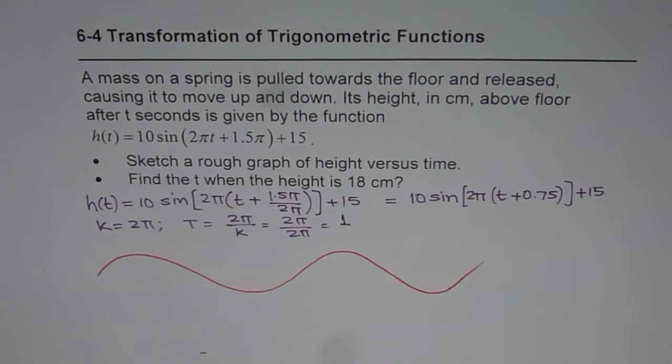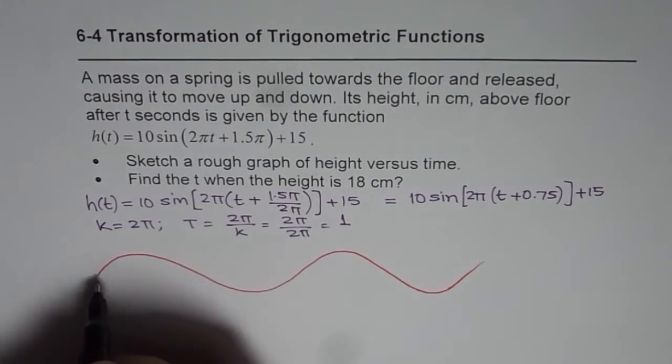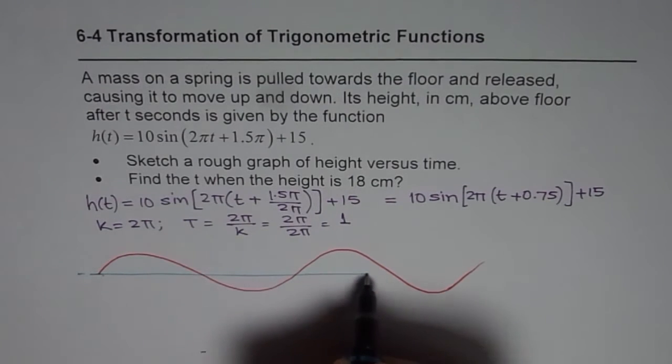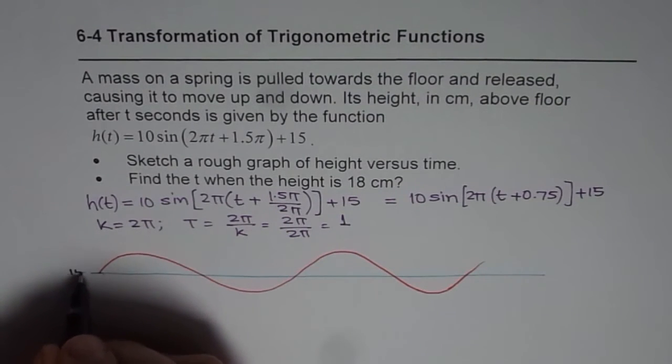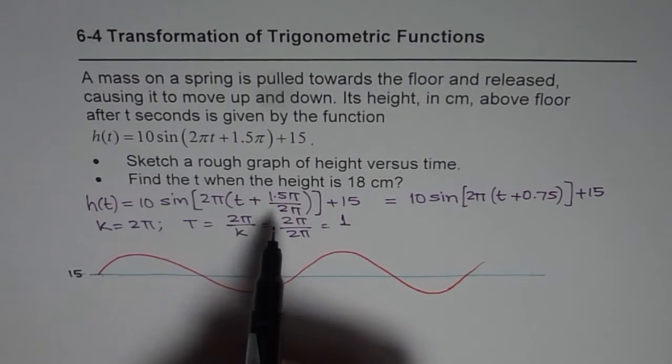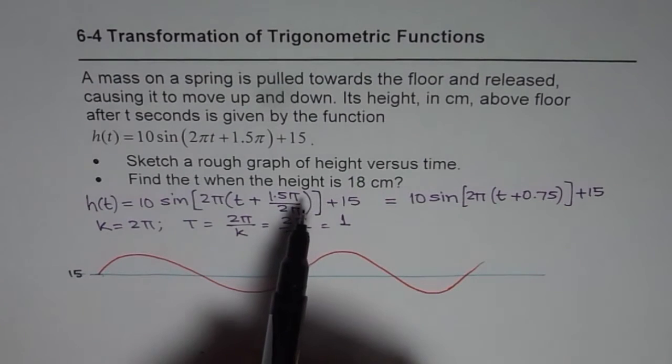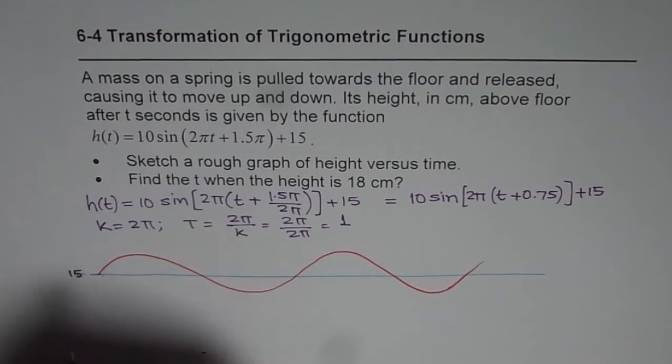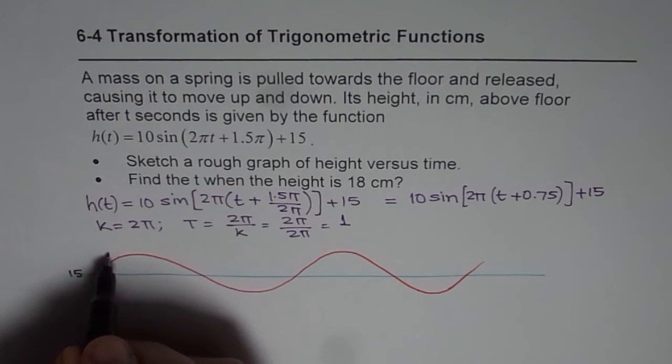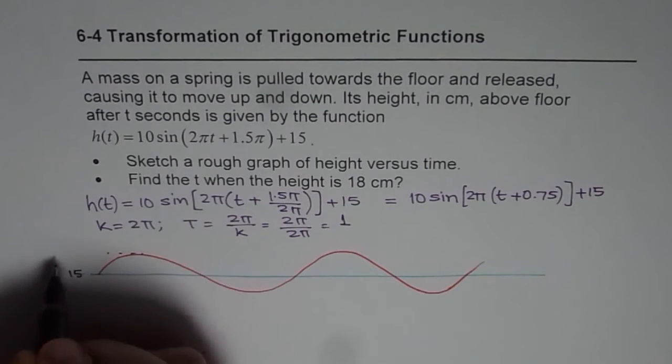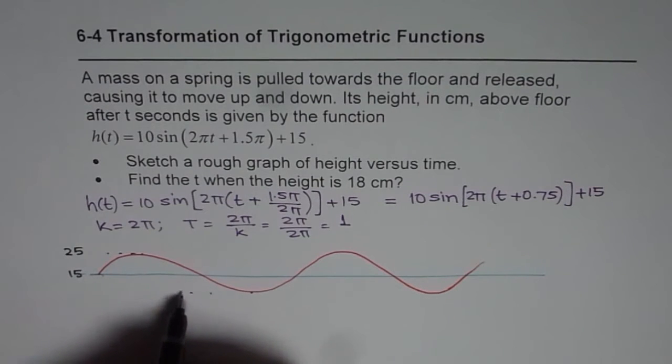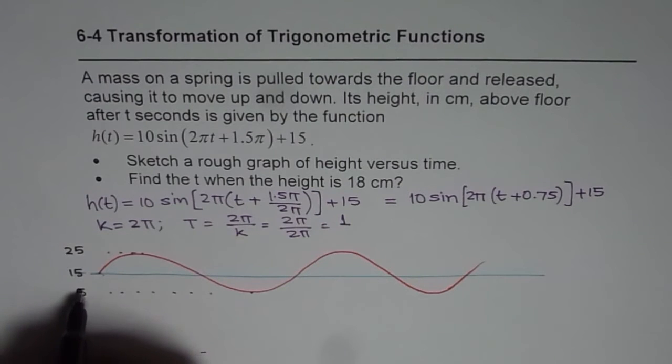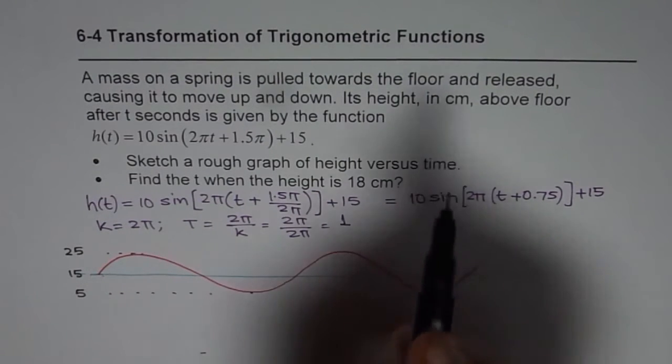Here what we notice is that 15 is the axis. So I'll write some values on the side. This is my 15. And it begins with moving 0.75 to the left. On the x axis, this point should be minus 0.75. Before that, let's go to the maximum and minimum. 10 is the amplitude. So maximum will be 10 plus 15, which is 25. And the minimum will be 5 units. These units are in centimeters. So height is in centimeters.